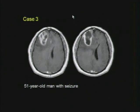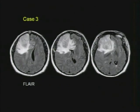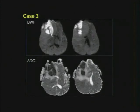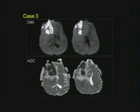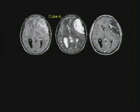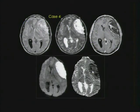Here's a mass in the left frontal lobe. The key finding is diffusion and ADC showing markedly restricted diffusion — pyogenic abscess. Diffusion is very, very helpful. Here's an extra-axial mass with markedly restricted diffusion — classic epidermoid.